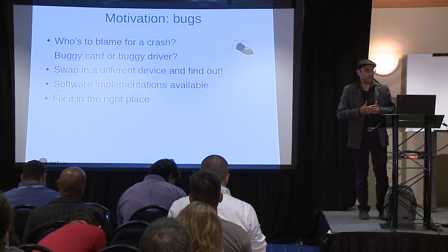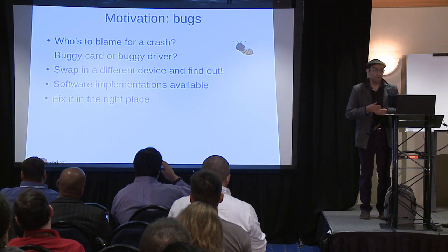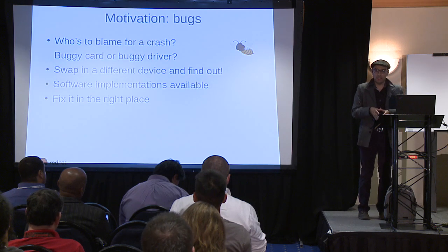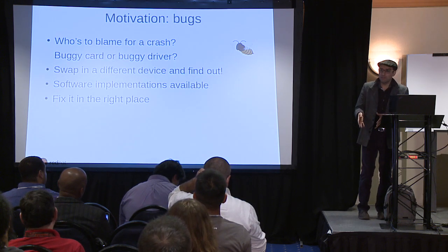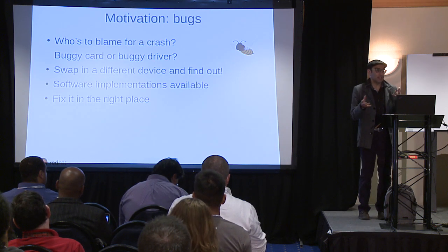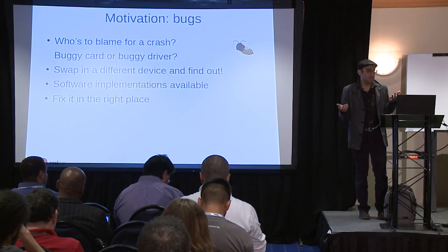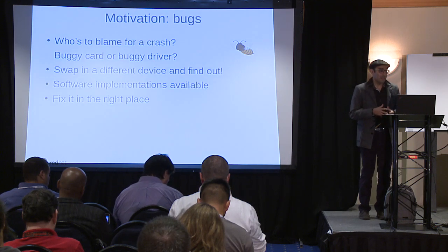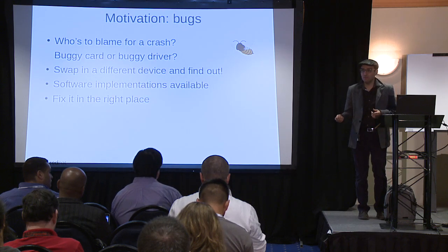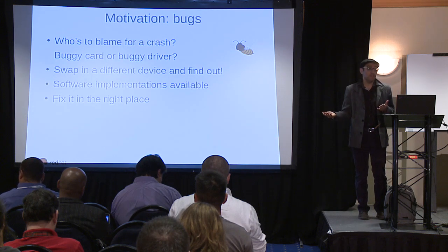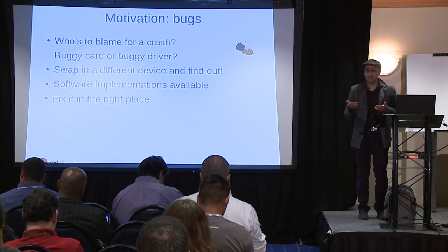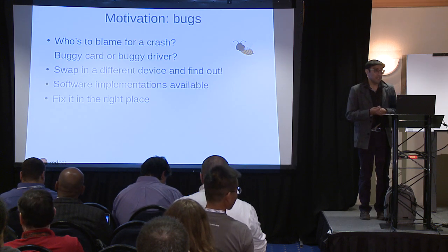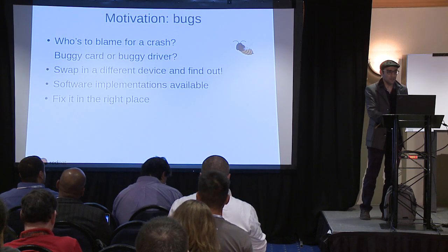Bugs do happen, and figuring out who's to blame can be tricky. IOMMU can maybe protect you so a crash will crash the card, but even then you're never sure whether it's the driver's fault or the card's fault — the specs can be difficult to decipher. If you have a good spec, you can eventually decide who's to blame and where the fix belongs. You can also swap in a different device; if you don't have a different vendor card, you can try software implementations. We actually use it that way as a debugging tool.